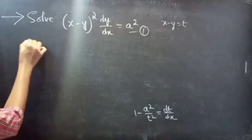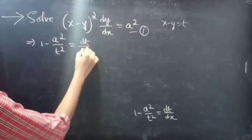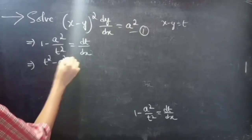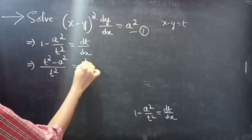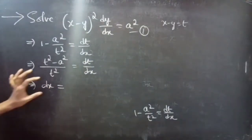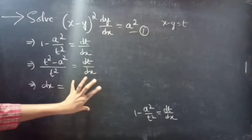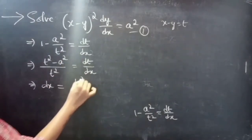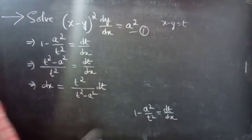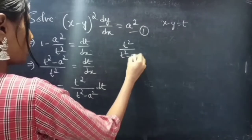So we have 1 minus a squared by t squared equals to dt/dx. Multiplying through, (t squared minus a squared) by t squared equals to dt/dx. Separating variables, dx equals to t squared by (t squared minus a squared) dt, with function of x on one side and function of t on the other.